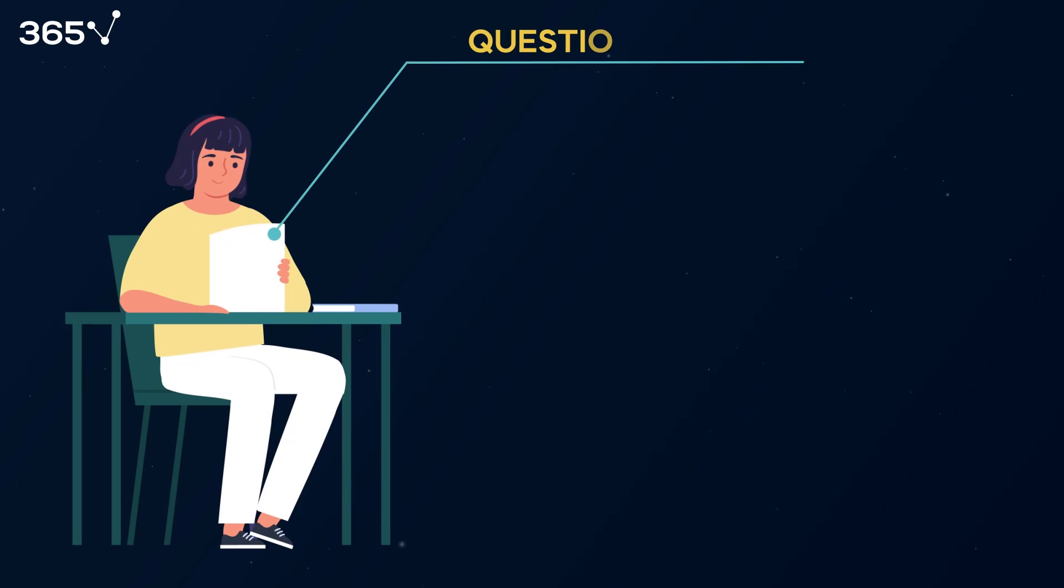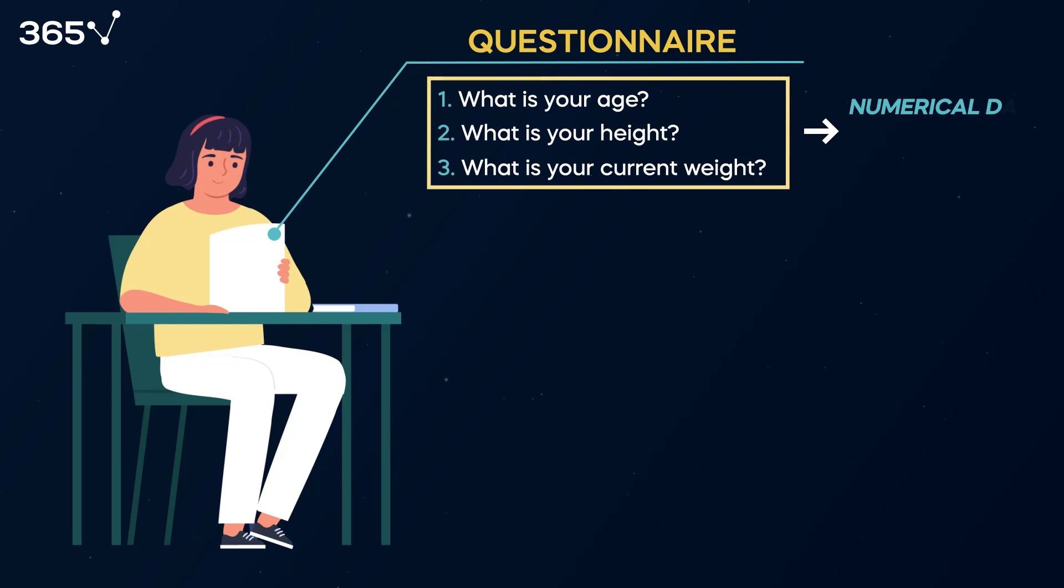In the questionnaire, students were asked to provide two data types: numerical and categorical. Numerical data are expressed in numbers, which can be measured. For example, students' age, height, and weight. We can count, measure, and add years and kilograms because this is numerical information.